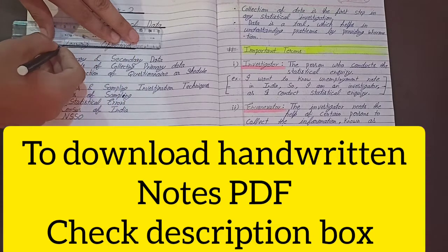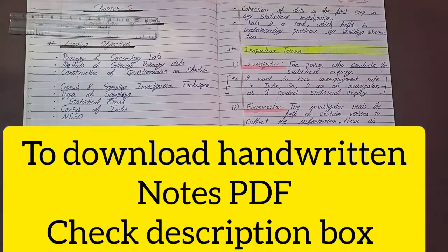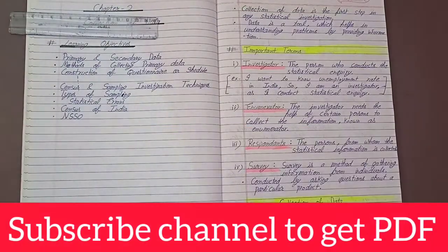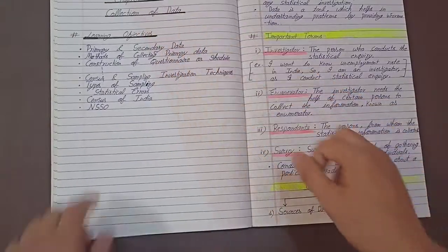If you want to download these PDFs, then you can go to the description box. I'll give you the link there so you can download it easily. You have to subscribe to my channel to download these PDFs. So now let's start Chapter 2: Collection of Data - Learning Objectives.